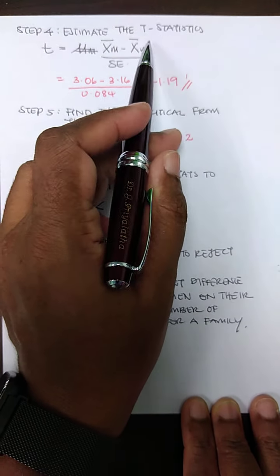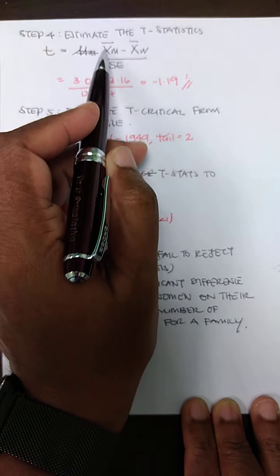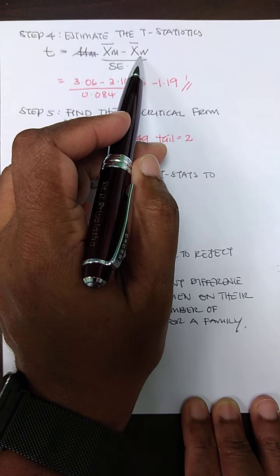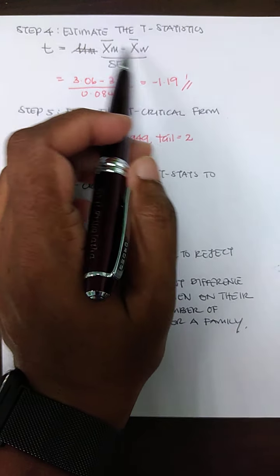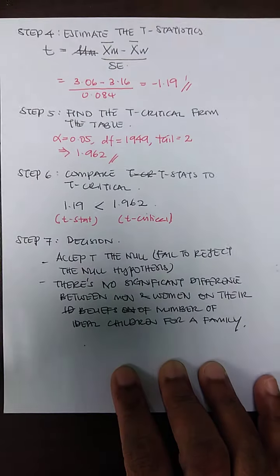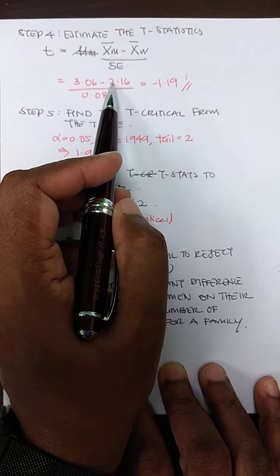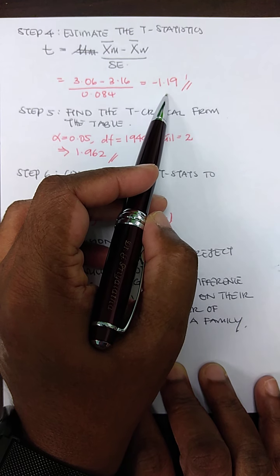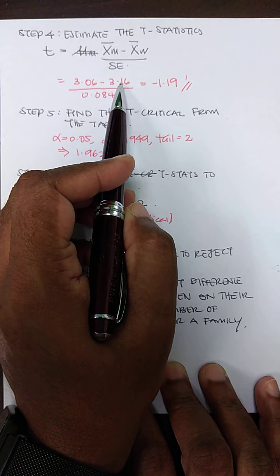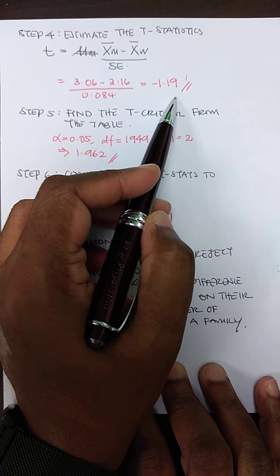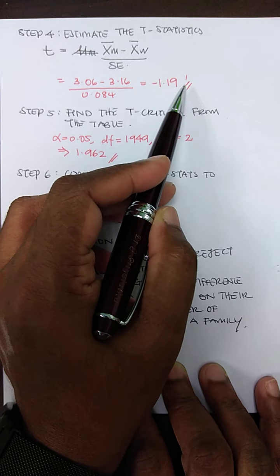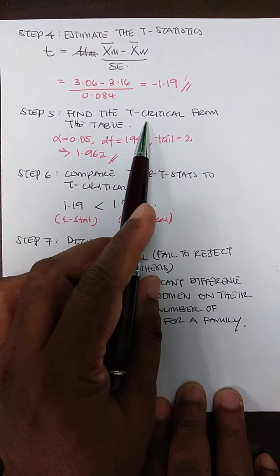Using that, I compute the t-statistic. The formula is the mean of group one minus the mean of group two, divided by the standard error. So: 3.06 − 3.16 = −0.10, divided by 0.084, giving t = −1.19. If you subtract in the other direction you get +1.19. The sign just indicates direction, so focus on the absolute value of 1.19.